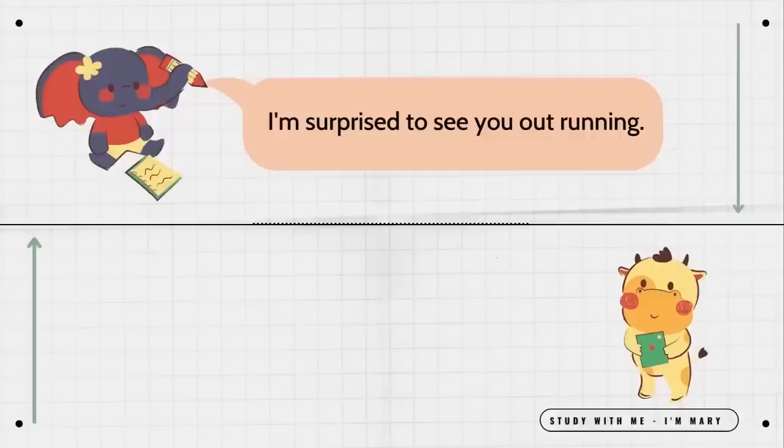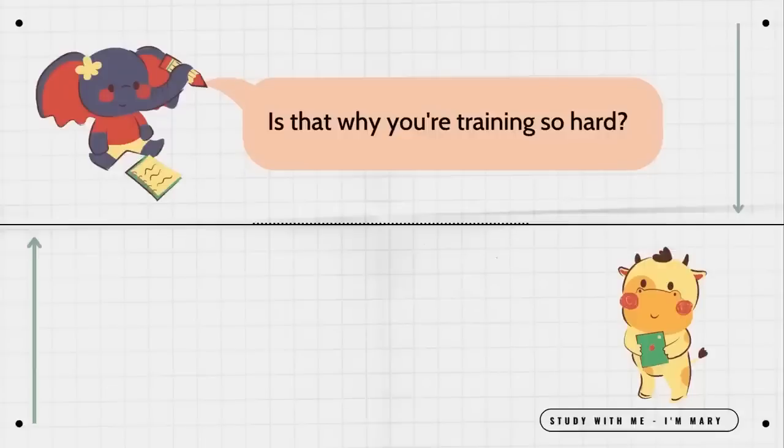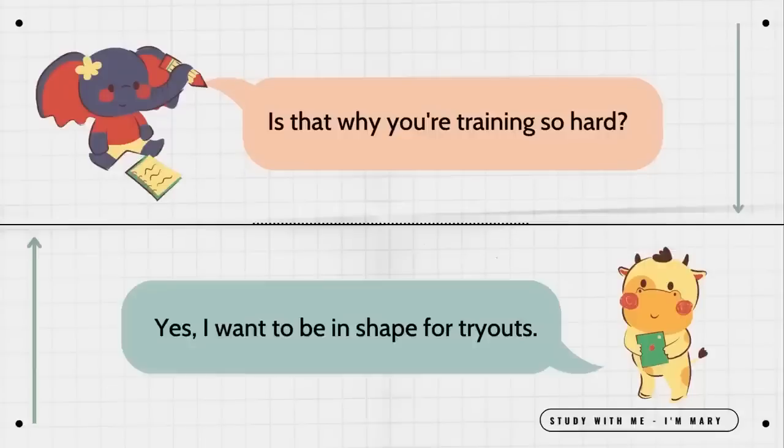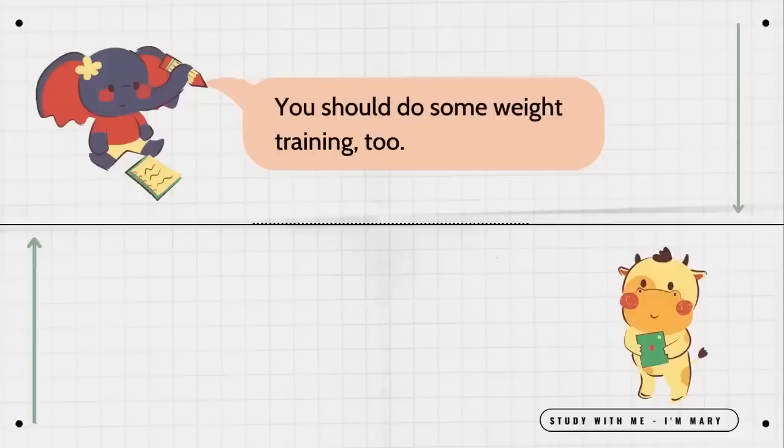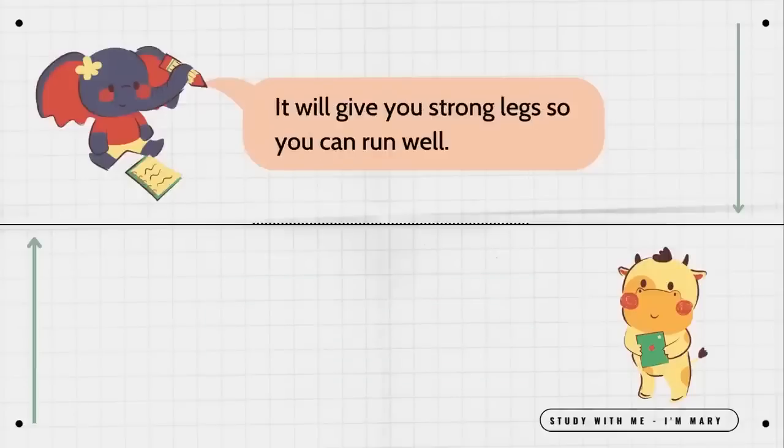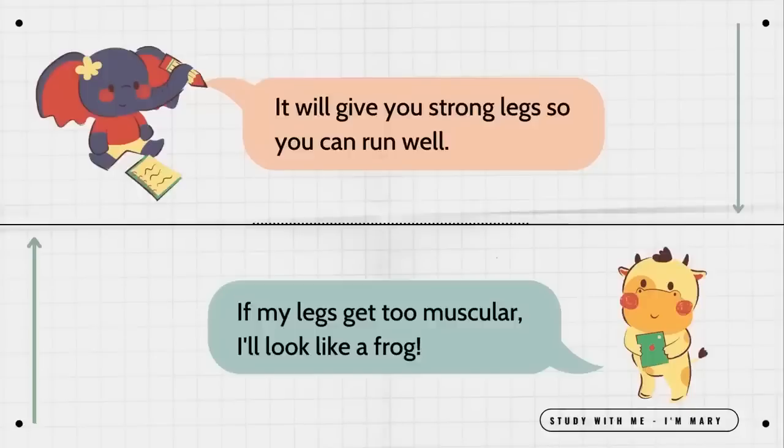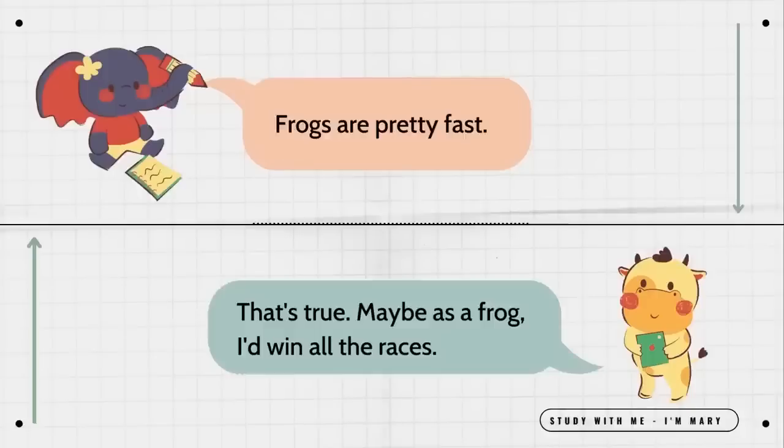I'm surprised to see you out running. I want to join the track team next semester. Is that why you're training so hard? Yes, I want to be in shape for tryouts. You just don't run to get in shape. What should I do then? You should do some weight training too. What good is weight training? It will give you strong legs so you can run well. If my legs get too muscular, I'll look like a frog. Frogs are pretty fast. That's true. Maybe as a frog I'd win all the races.